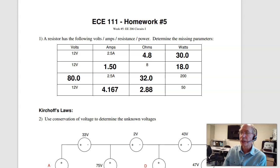This is the solution to homework set number 5 for ECE 111, Circuits 1 review. The first problem is calculating volts, amps, ohms, and watts given two parameters.